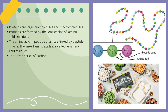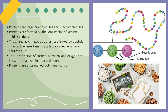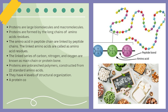Proteins are unbranched polymers constructed from 22 standard amino acids, and only those 22 standard amino acids have the ability to be incorporated into proteins. Proteins have four levels of structural organization: primary, secondary, tertiary, and quaternary. To form a protein, it should consist of at least one polypeptide chain.